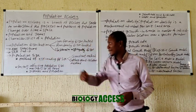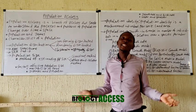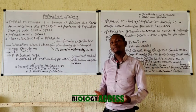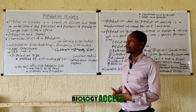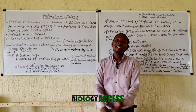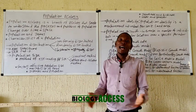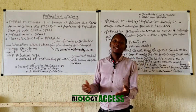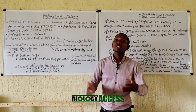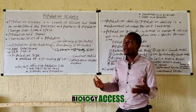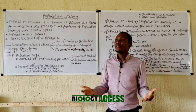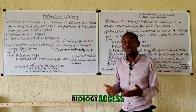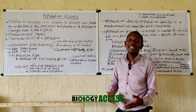The next characteristic is population size, which deals with the number of individuals in a particular geographical location. A population size can be large or small. For example, a small population — like students in a particular class — is more vulnerable if a catastrophe occurs, as the entire population could be wiped out. A large population spread over a large geographical area may have a higher chance of survival from any natural disaster.